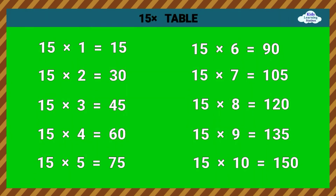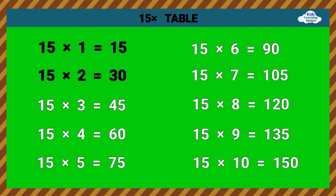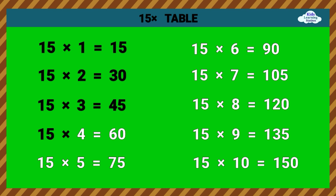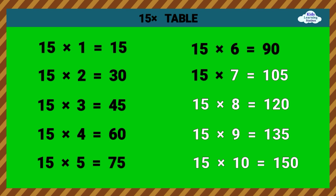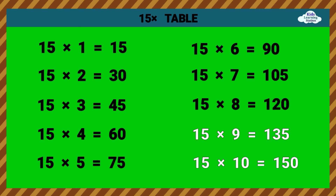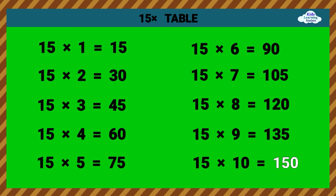Fifteen Times Table. 15 times 1 equals 15. 15 times 2 equals 30. 15 times 3 equals 45. 15 times 4 equals 60. 15 times 5 equals 75. 15 times 6 equals 90. 15 times 7 equals 105. 15 times 8 equals 120. 15 times 9 equals 135. 15 times 10 equals 150.